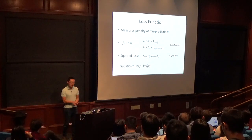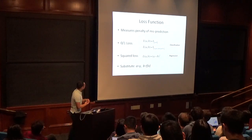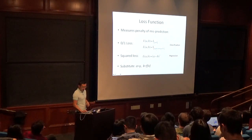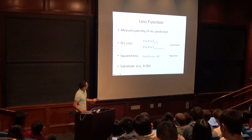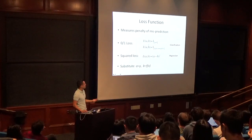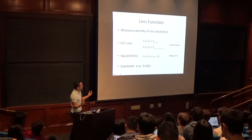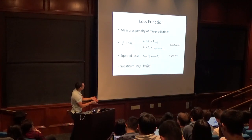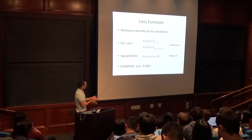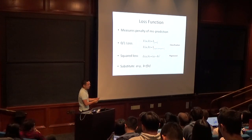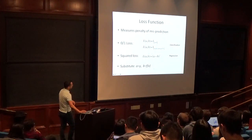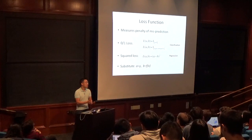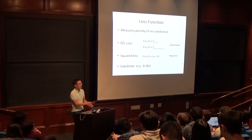There are many choices of loss functions. For classification, the preferred loss is 0-1 loss: if the prediction and the true label agree in sign, the loss is 0; if they disagree, the loss is 1. In the special case where the prediction is exactly 0, you still incur a loss of 1. Squared loss is preferred for regression. These are the two canonical examples: 0-1 loss for classification, squared loss for regression.